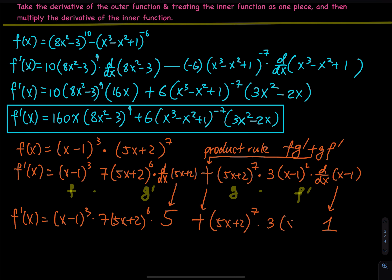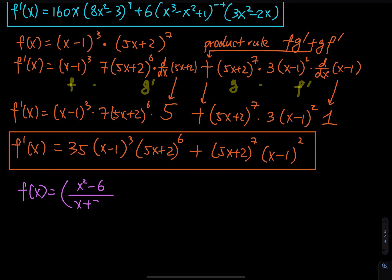The next function — you don't need to rewind the video, I will write down the function for you. The next one is f of x equals x squared minus 6 divided by x plus 2, and then you raise the whole thing to the 3 over 2 power. So we have a fraction, so definitely there is a quotient rule. However, the entire fraction is raised to the 3 over 2, so that means there is a chain rule in there as well.